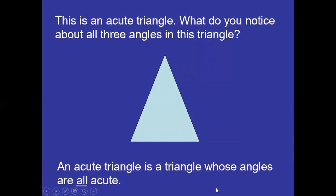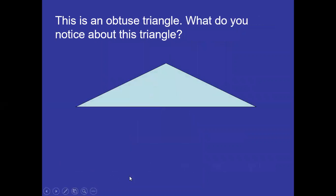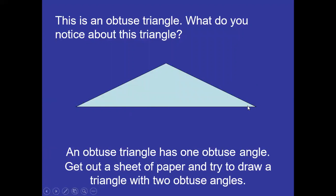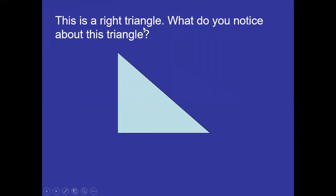An acute triangle is a triangle whose angles are all acute. Now, in this next triangle, one angle is very big — more than 90 degrees but less than 180 degrees — so it is known as an obtuse triangle. Can a triangle have more than one obtuse angle? No, because the three angles in a triangle add up to 180 degrees. So one angle is obtuse and the other two must be acute.